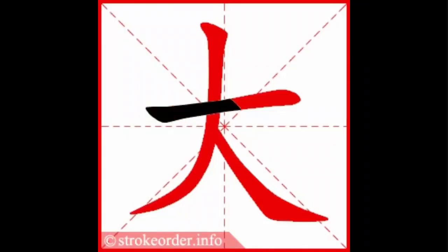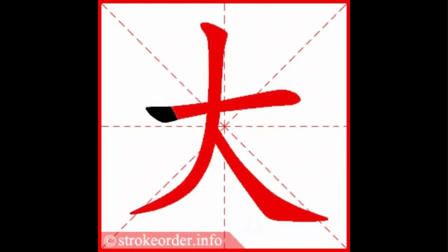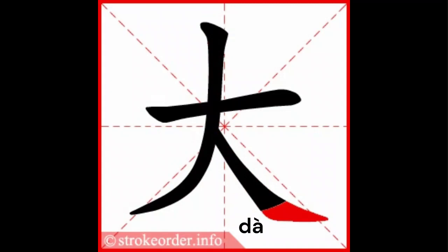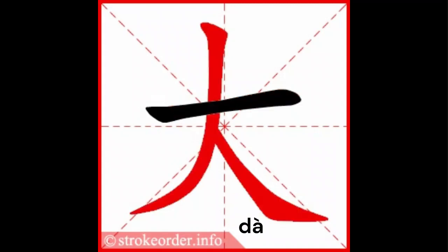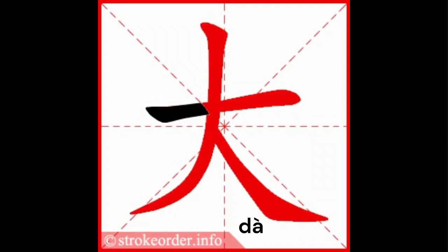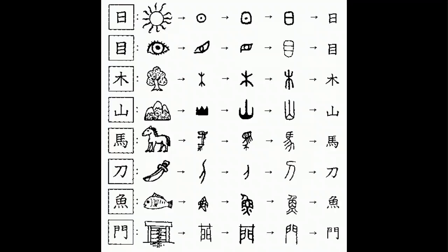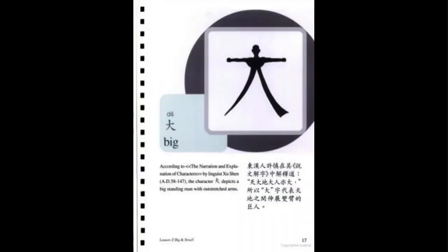In today's video, we'll teach you the Chinese character for big. This is a fun character in the Chinese language because the character looks like the item it is describing, which is otherwise known as a pictograph. In the Chinese language, about 4% of all characters are pictographs, which means the character evolved from pictures, the earliest of which were found on oracle bones.